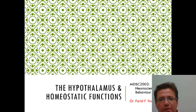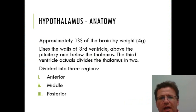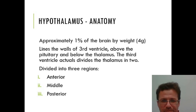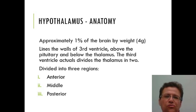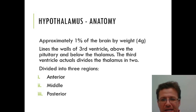In this lecture we want to look at the hypothalamus and explore its role as a central part of the brain that regulates homeostatic functions. The hypothalamus is actually a very small part of the brain, close to the third ventricle, located just above the pituitary gland — and as the name suggests, below the thalamus, hence hypothalamus. The third ventricle actually divides it in two, and there are three regions: the anterior, middle, and posterior.